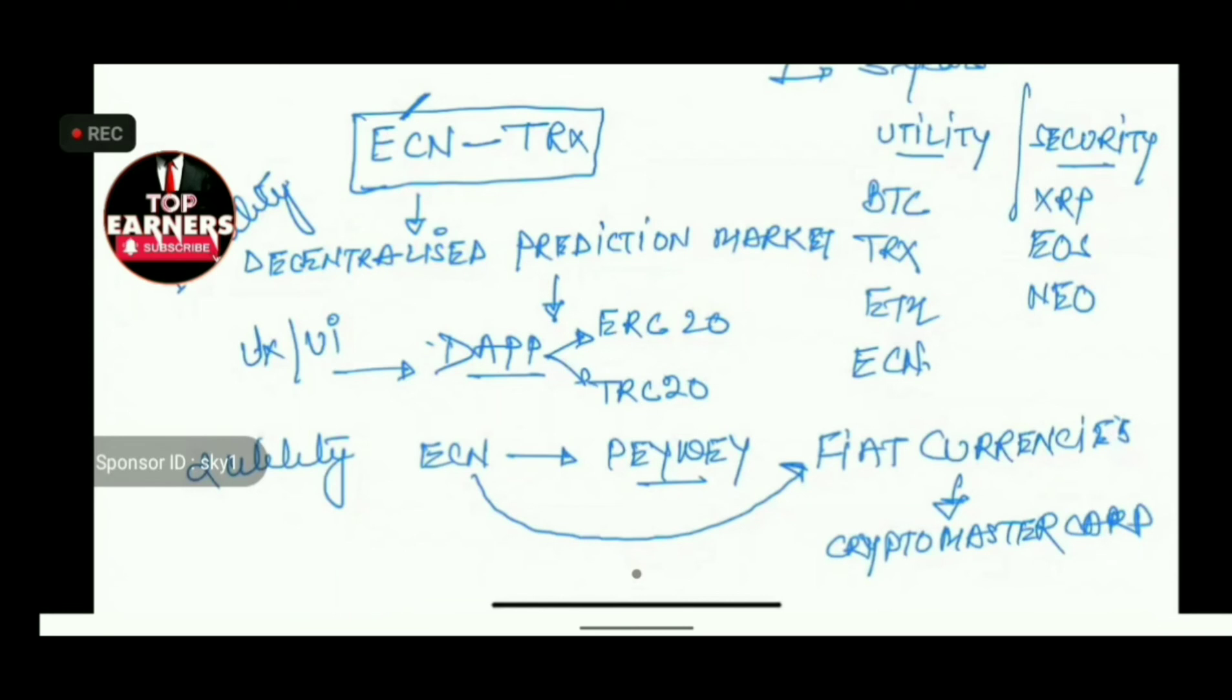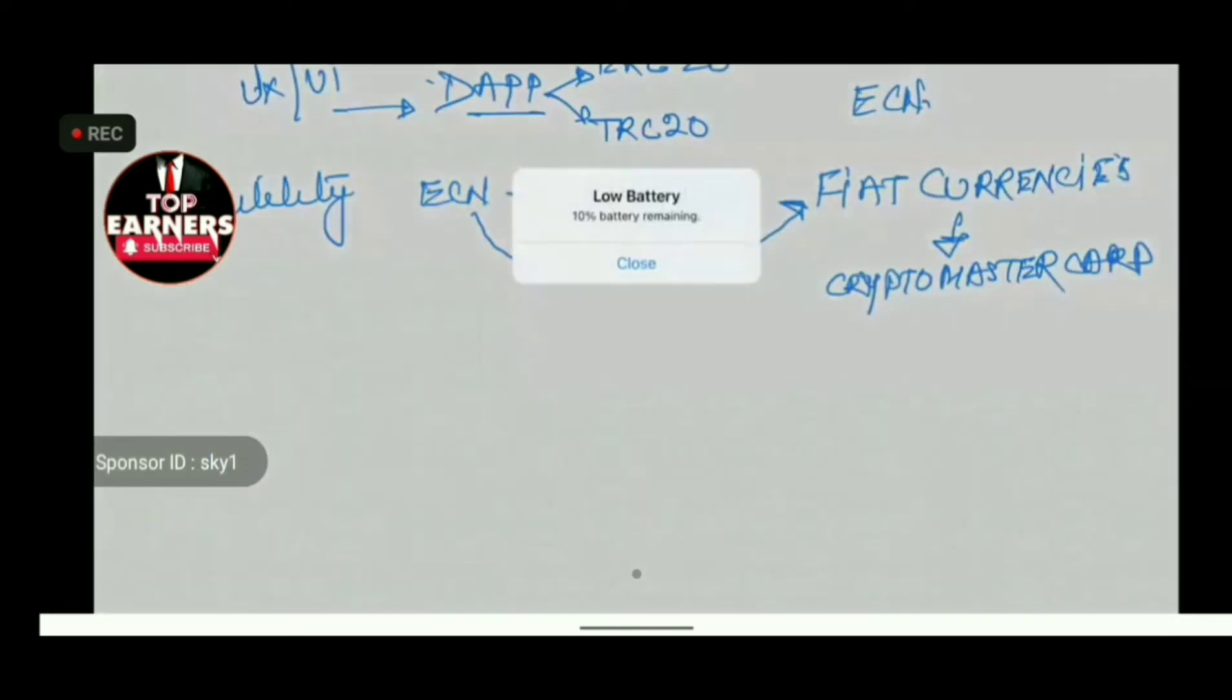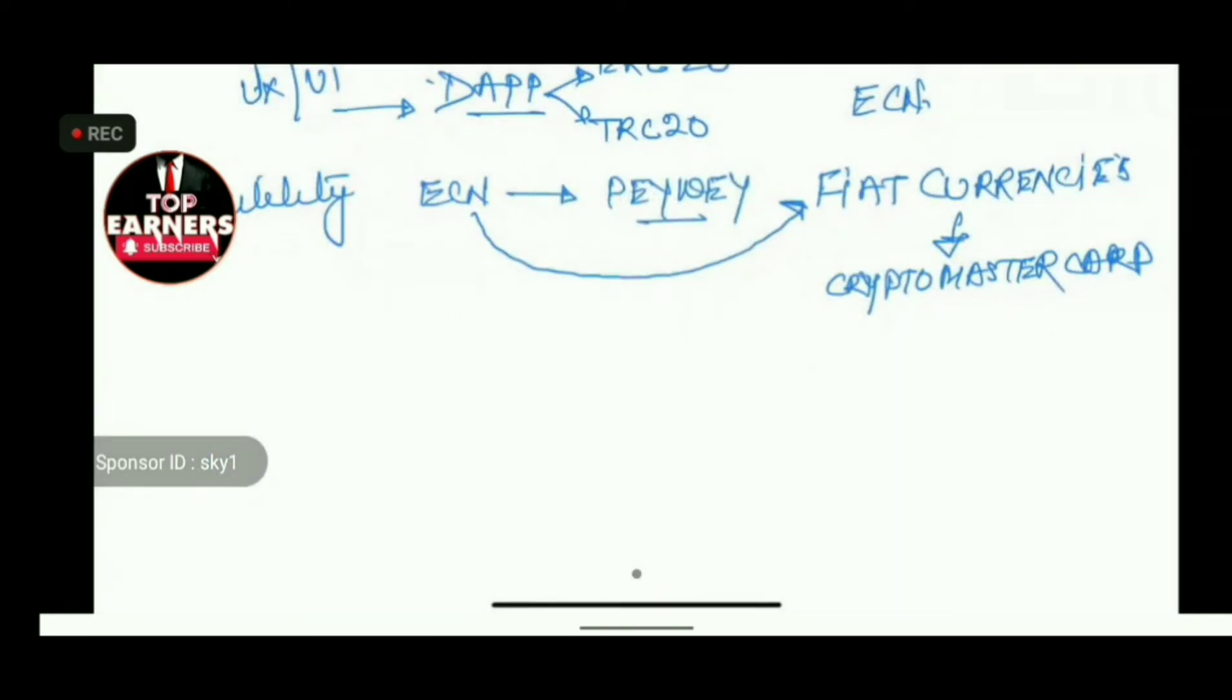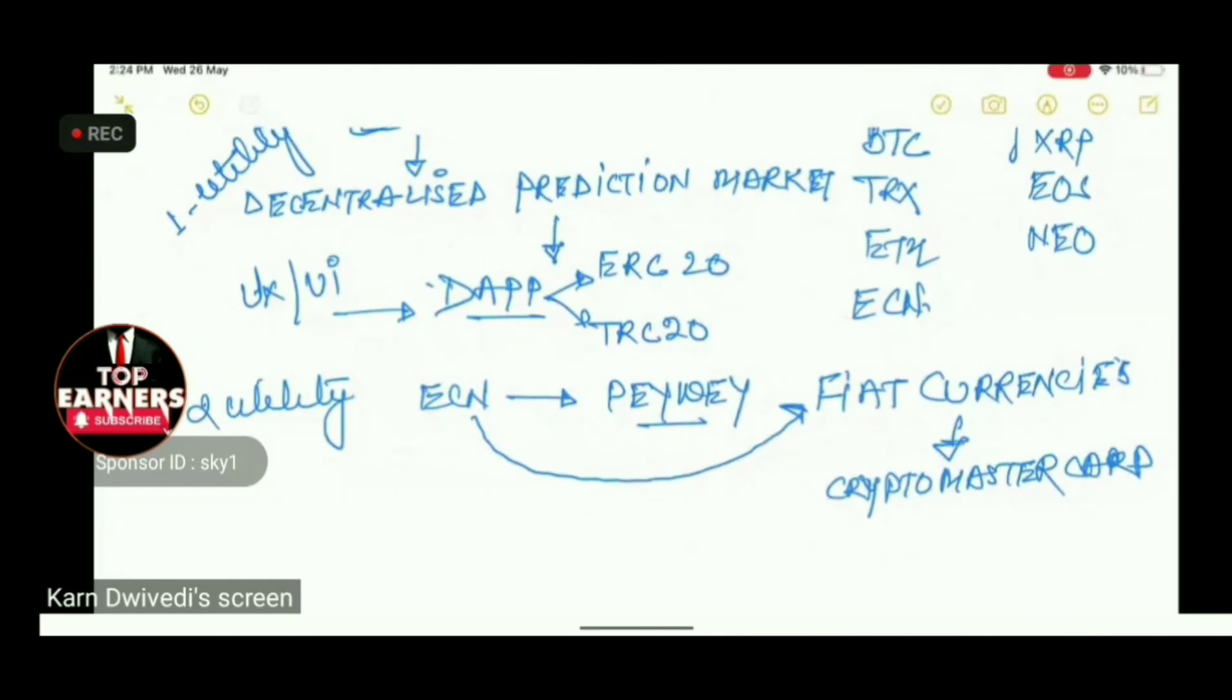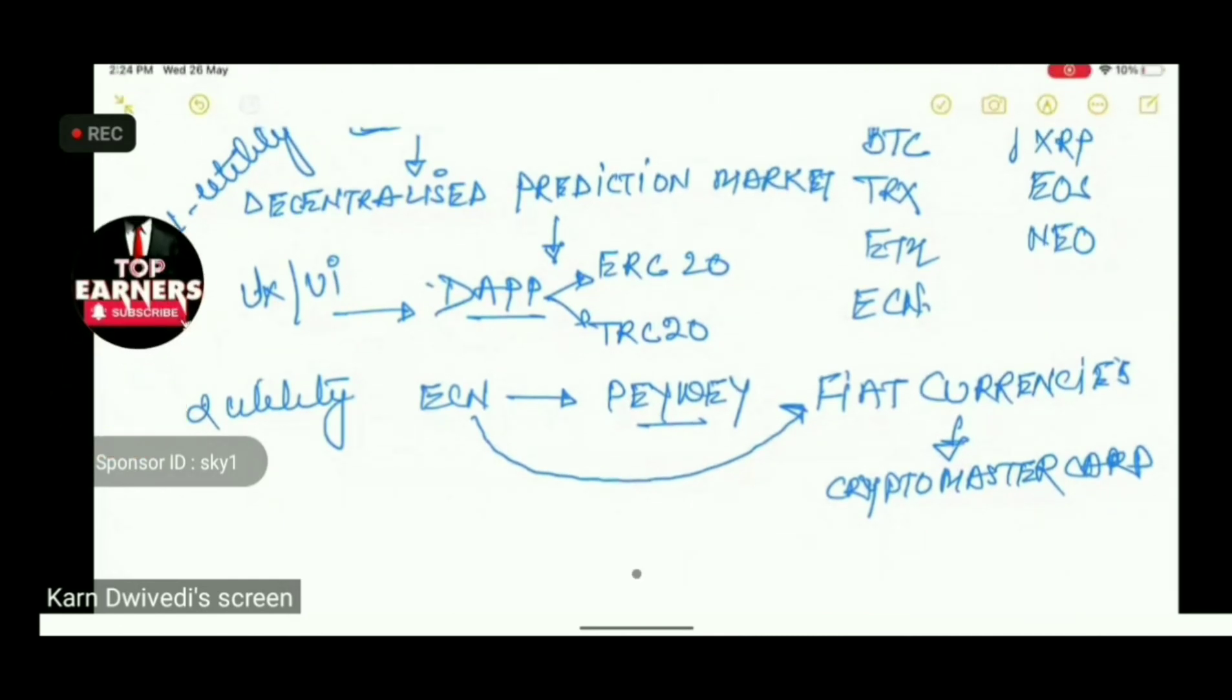This is the second utility. Similarly, there will be more utilities. This is a utility token. This is what ECN does. If somebody asks you what is ECN, you give these answers: it's a decentralized prediction market, is the first use case of ECN. Accessibility to the fiat currencies along with the crypto card backed by Mastercard is the second use case of the utility. And we have much more utilities and use cases coming.